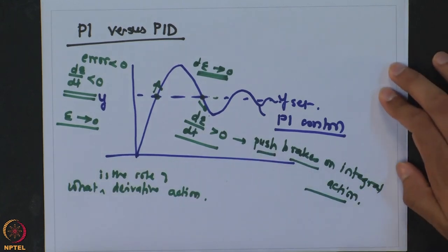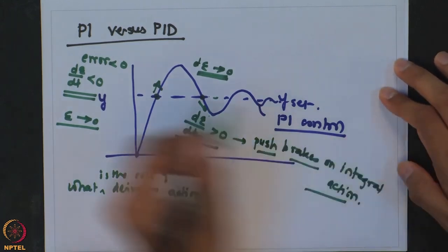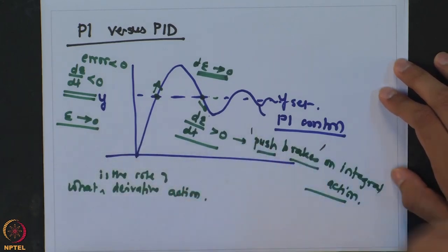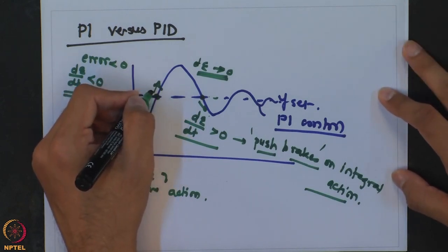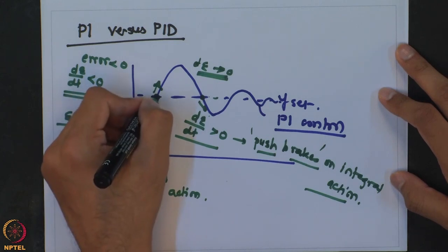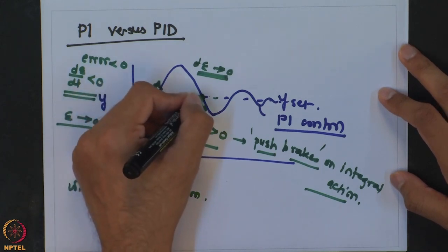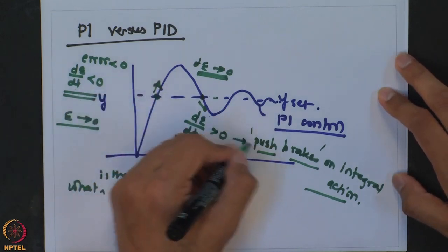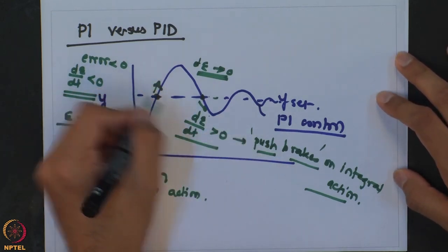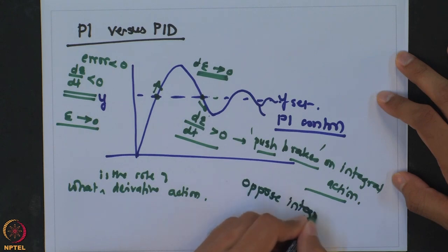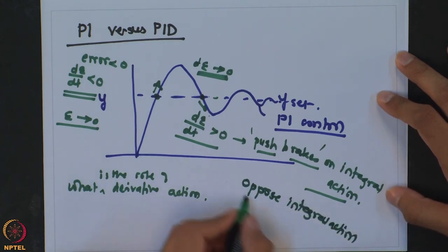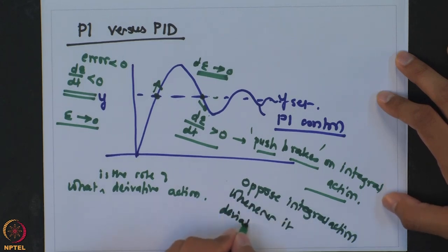The derivative action is going to push brakes on the integral action. Whenever the response tries to leave the set point, the derivative action is going to kick in and oppose the integral action whenever it deviates from the set point value.